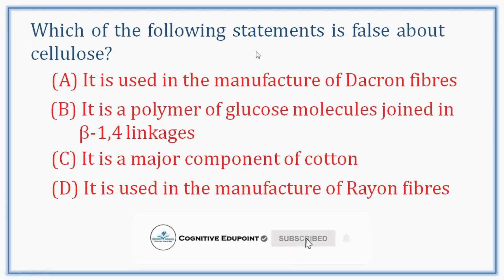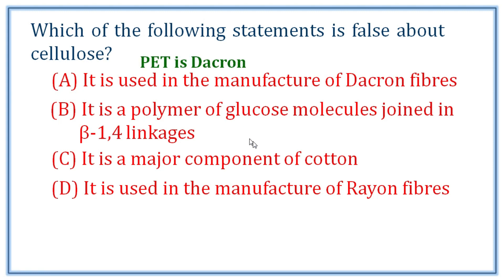Next question: which of the following statements is false about cellulose? Cellulose is a biopolymer. Statement A is false about cellulose. Statement: it is a polymer of glucose molecules joined in beta-1,4 linkages — correct. It is a major component of cotton (cotton is 90% cellulose) — correct. It is used in the manufacture of rayon fibers — correct. So B, C, D are correct. A is wrong. Correct answer: A.